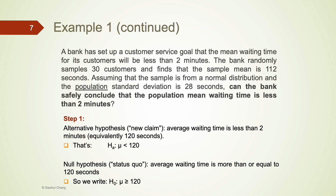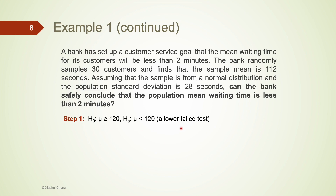Let's get back to the bank example and set up the hypothesis. The alternative is usually easier to set up compared to the null, because it involves the research question we want to test — that is, whether the average waiting time is less than 2 minutes or not. So the alternative hypothesis is mu, the population parameter, less than 2 minutes, and I convert that to 120 seconds. Because H0 is the opposite of the alternative hypothesis, H0 is going to be mu is greater than or equal to 120 seconds. From the sign of inequality in the alternative hypothesis, which is less than, we can deduce this is a lower-tailed test.